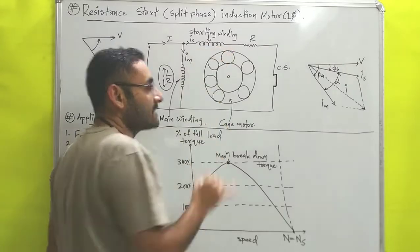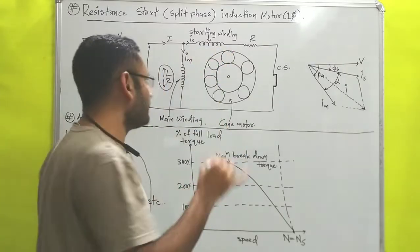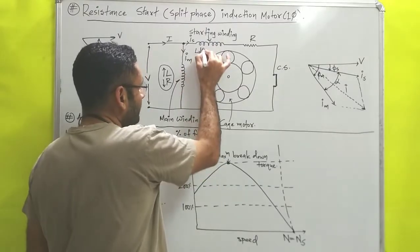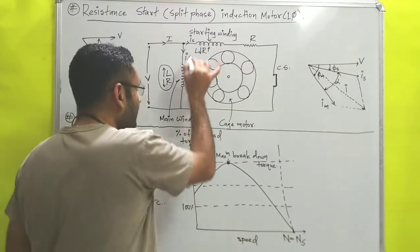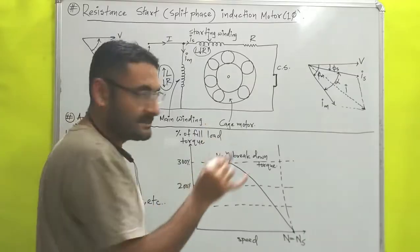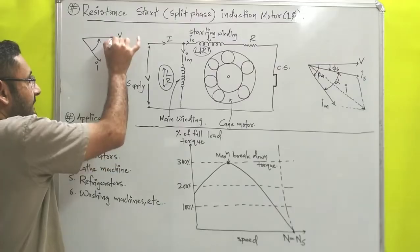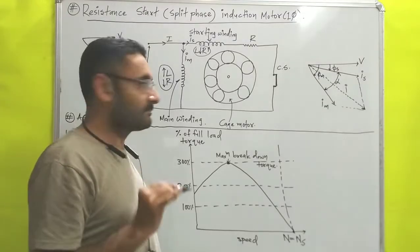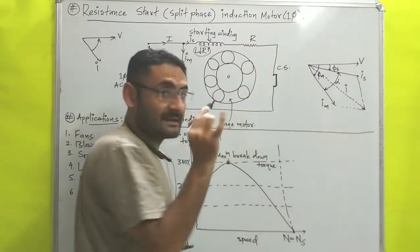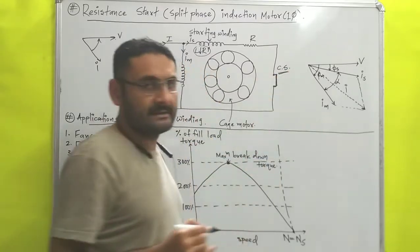The starting winding is designed in such a way that its inductance is low but it has high resistance. That means it will also behave like a series LR circuit, and in a series LR circuit, the current will lag behind the potential by some phase angle. Additionally, one resistor is connected in series with the starting winding, and with that resistor, a centrifugal switch is connected in series.